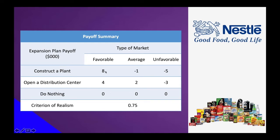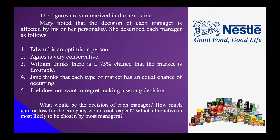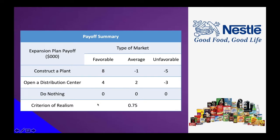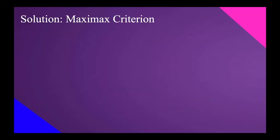The criterion of realism is 0.75, which is the percentage chance that the market is favorable — what William thinks about their future at Nestle. In decimal form, that is 0.75, and this will be used for the Hurwicz criterion later. Let's start our solution.